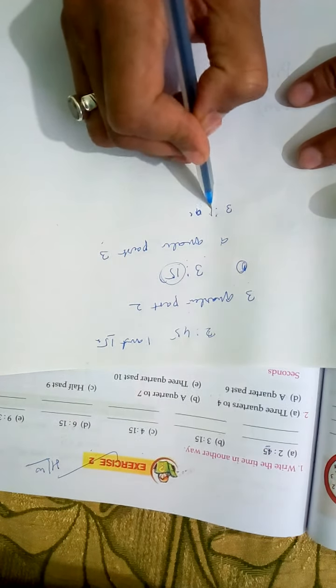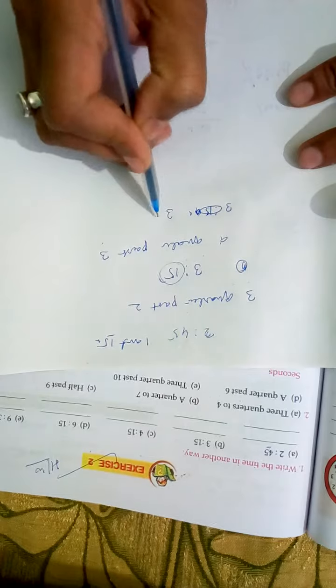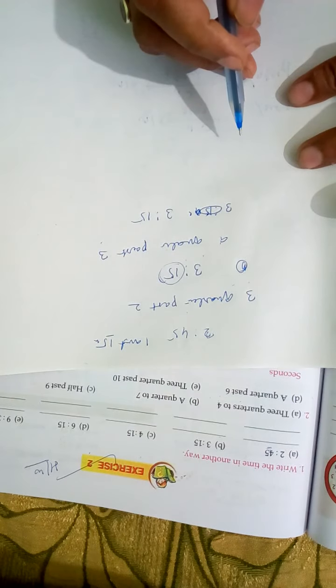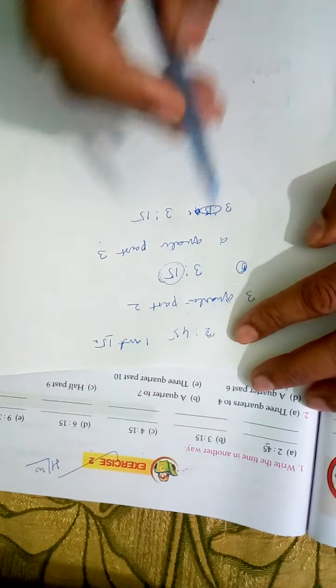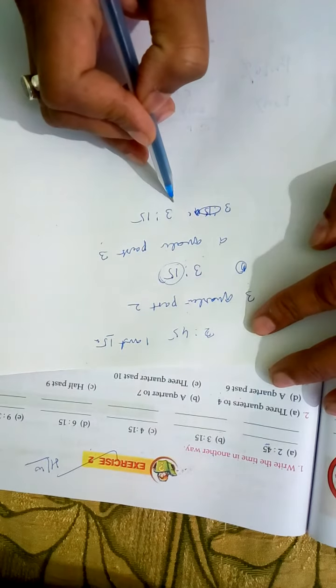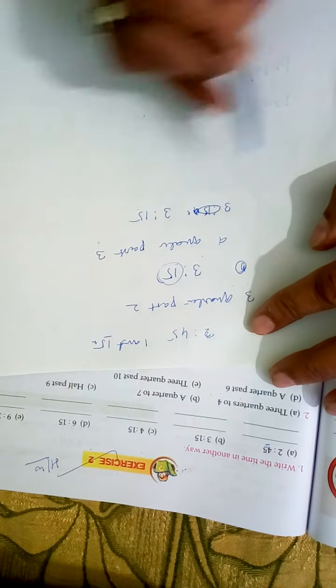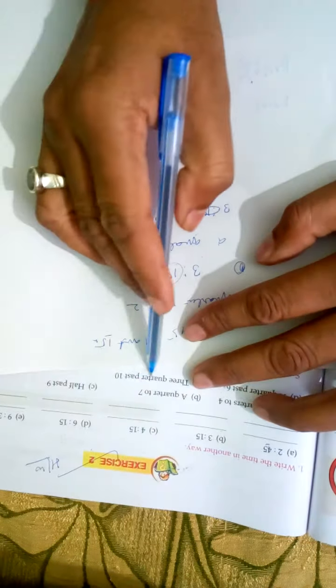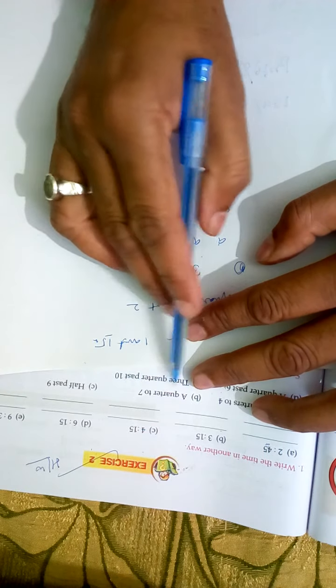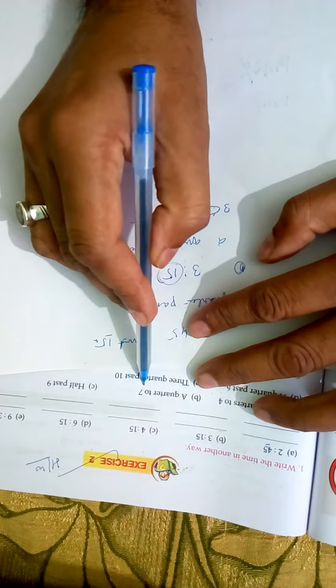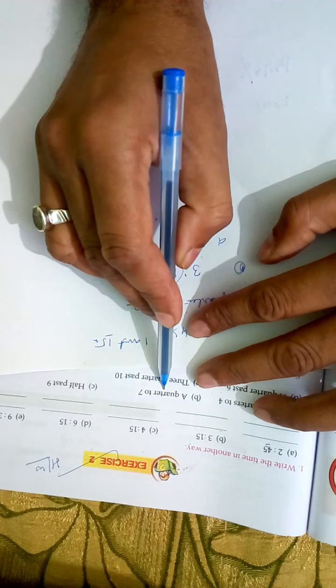3:15, 3 quarter to 4, 3:45. Similarly, a quarter to 7. Quarter to 7, then 7, they need 1 quarter, so it will be 6:45. Okay, this is 6:45.